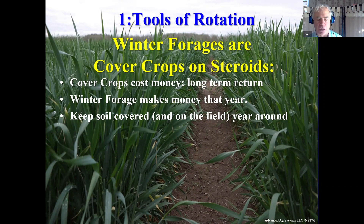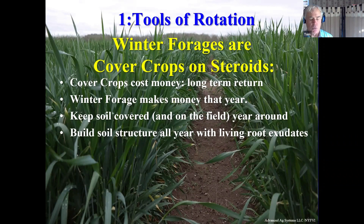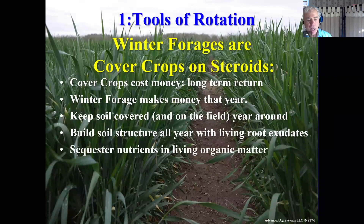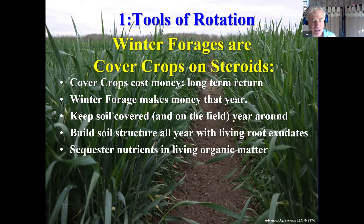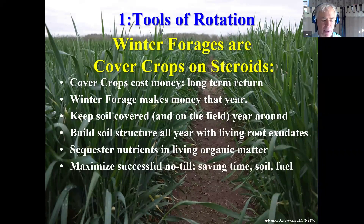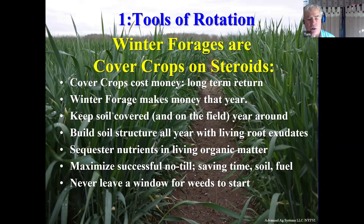You're keeping the soil covered, keeping the soil on the field. Rodale found that it builds structure all year round with living root exudates. I don't want to see any bare soil over the winter — we want to keep something growing all the time. It sequesters nutrients and living organic matter, which keeps it from leaving the field. You're keeping particulate phosphorus from leaving. By having living roots, you're keeping dissolved phosphorus and nitrogen from leaving — it stays in the plants. It also allows us to maximize no-till, saves on time, fuel, soil, and we never leave a window for weeds to get started.